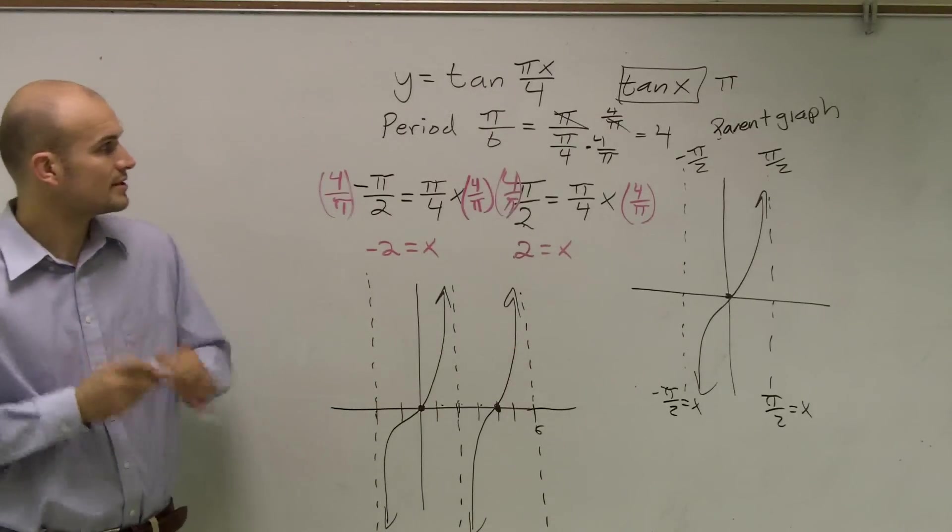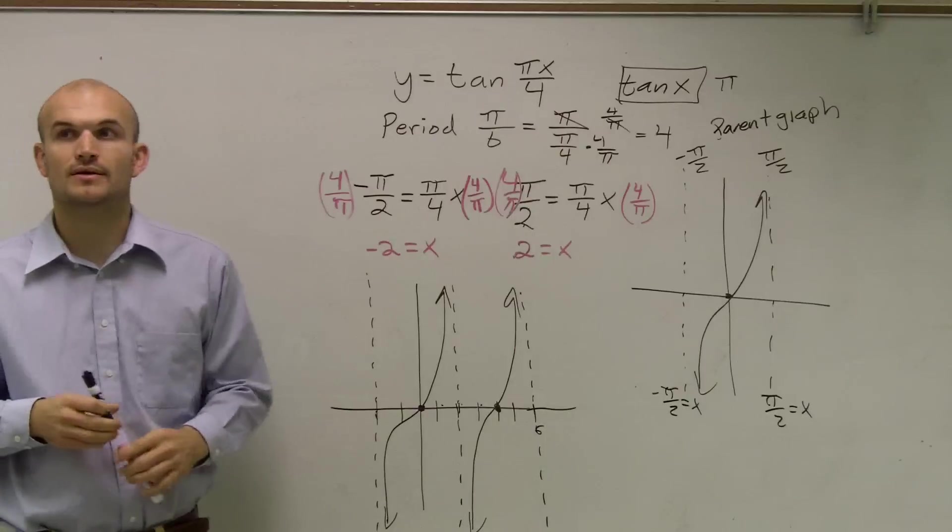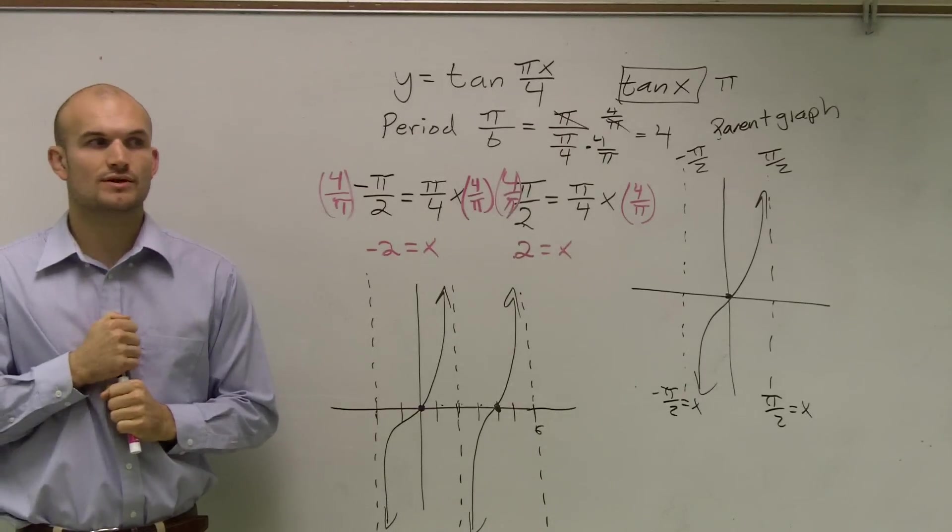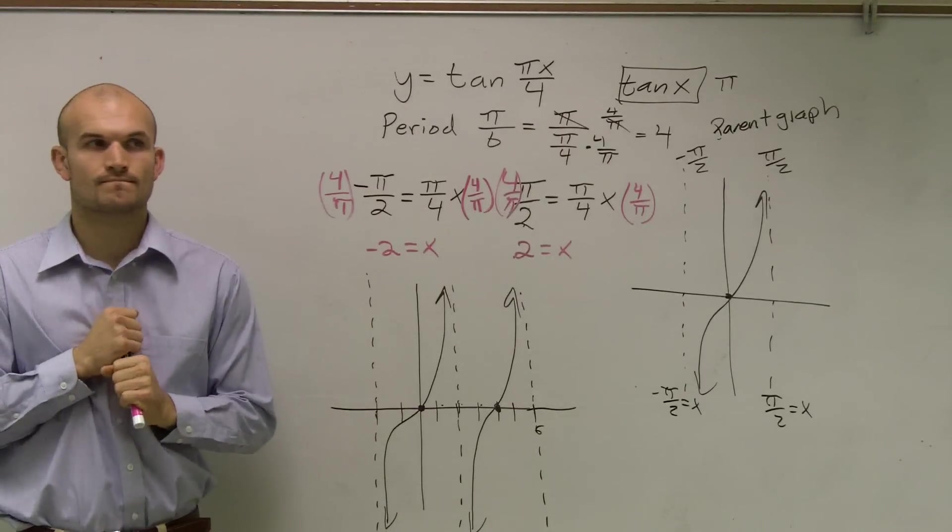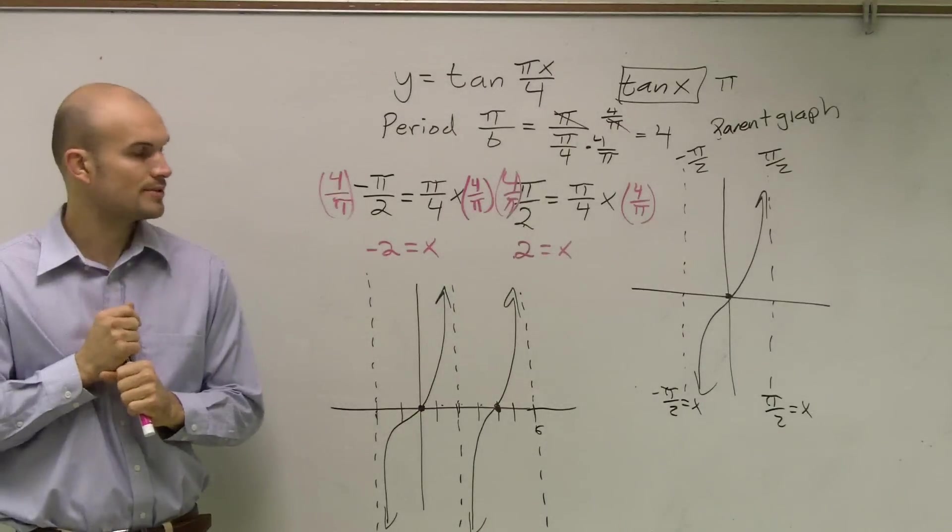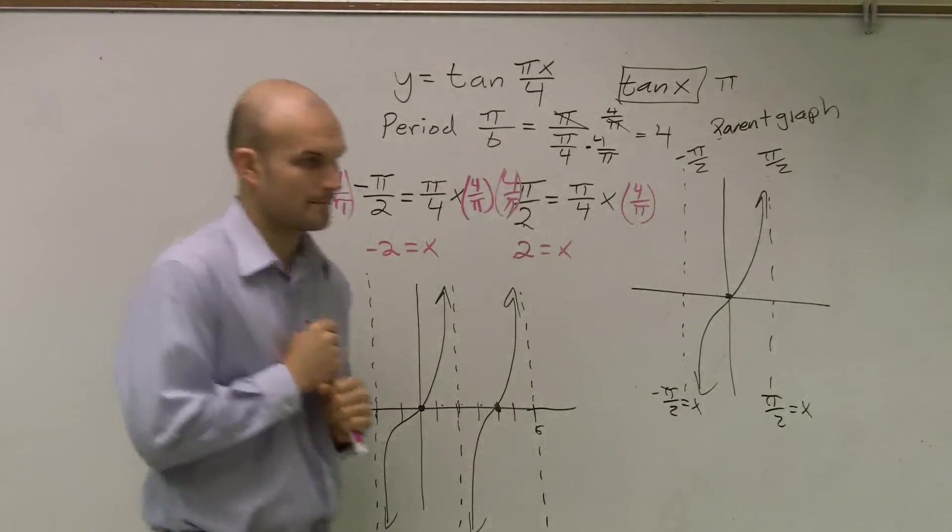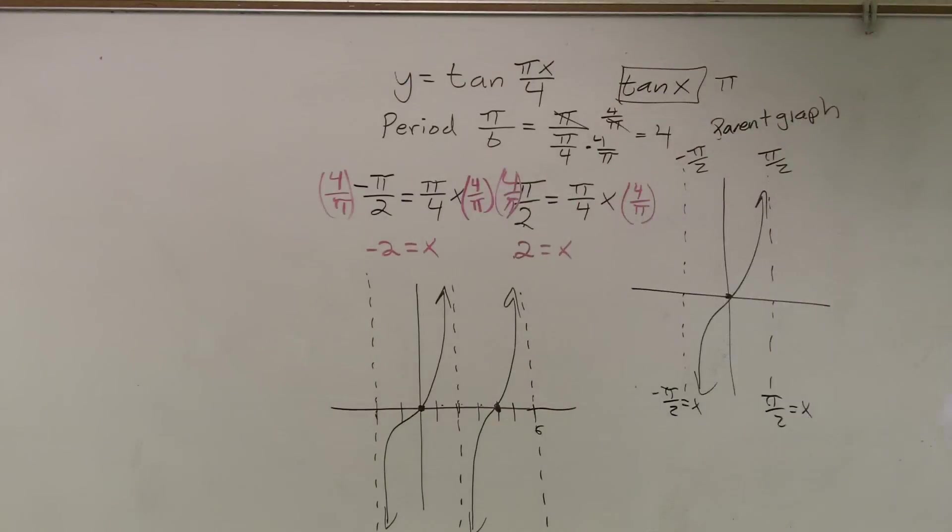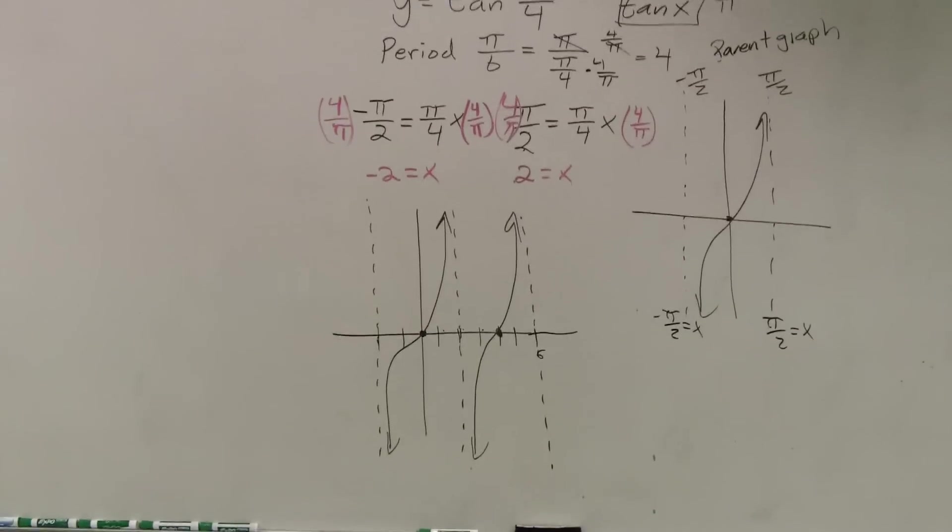What's our period is 4? Right, because remember we took π divided by b. Okay? Does anybody have any general questions on that? How many do you have to do this? I'm just asking usually for two periods. It's okay. Thank you.